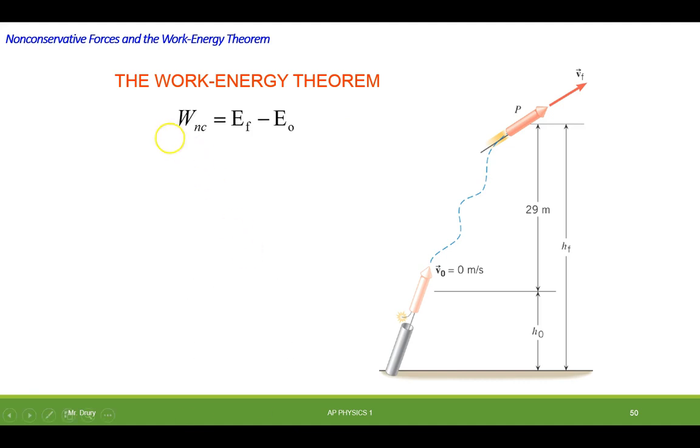The work energy theorem says that the non-conservative forces are going to be equal to the final kinetic energy. It's going to be the final energy minus the initial energy. So basically, the added work that we added to the system or removed from the system would be equal to the final energy which has potential and kinetic, minus the initial energy which has potential and kinetic.